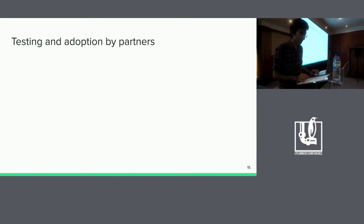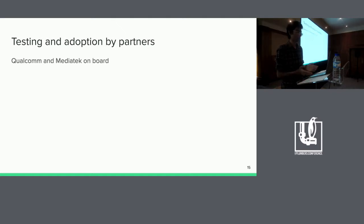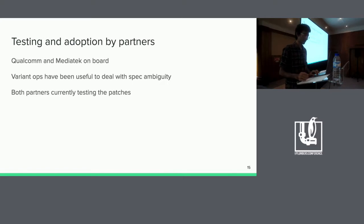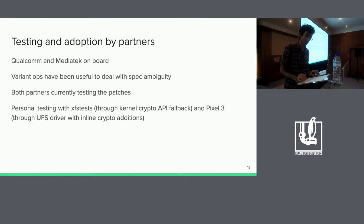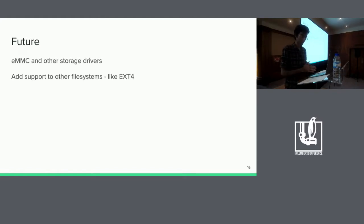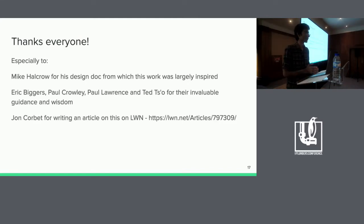On to testing and status of our partners. We have Qualcomm and MediaTek who are on board with our approach. Crypto-variant operations have been very useful especially where the UFS crypto specifications have been incomplete, particularly with regards to power management. Both of these partners are currently testing our patches. We've also been testing the patches using XFS tests by running all inline encryption through the kernel crypto API fallback. They've also been tested by backporting them to the Pixel 3 and using the inline encryption hardware that the UFS card on the device has. Future work includes adding support to MMC and other storage drivers, and we'd also like to add support to other file systems like ext4.